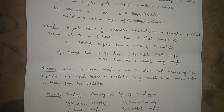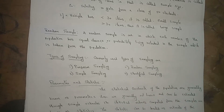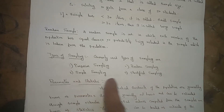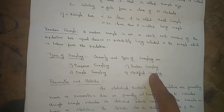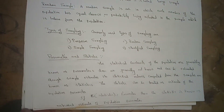Types of sampling: there are a few commonly used types. The first one is purposive sampling, the second is random sampling, the third is simple sampling, and the fourth is stratified sampling. These are the four commonly used types of sampling.